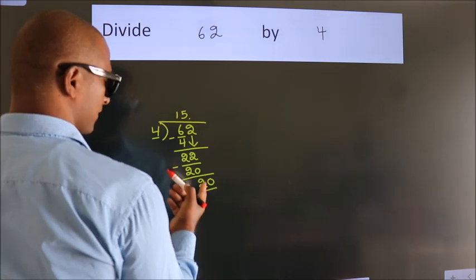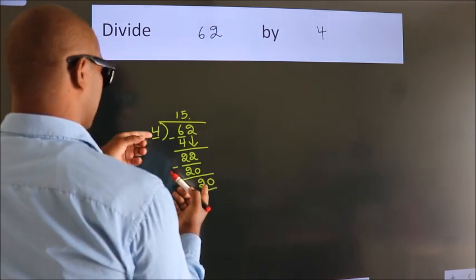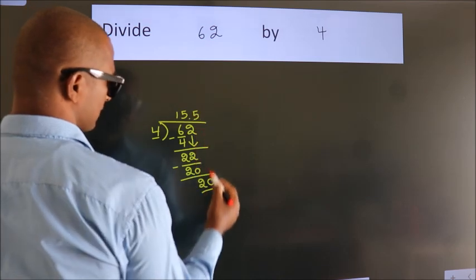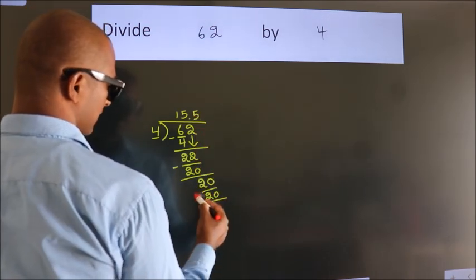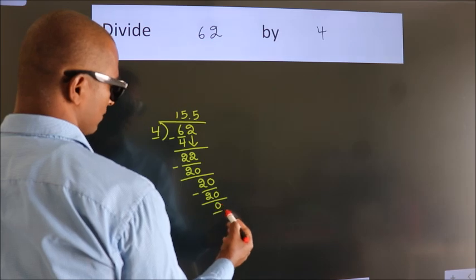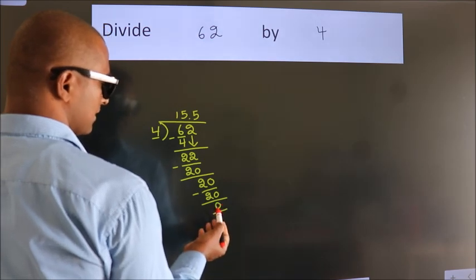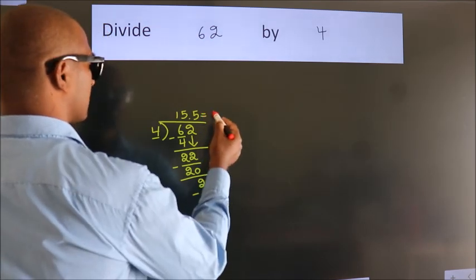So, 20. When do we get 20? In 4 table, 4 fives 20. Now, we subtract. We get 0. We got remainder 0. So, this is our quotient.